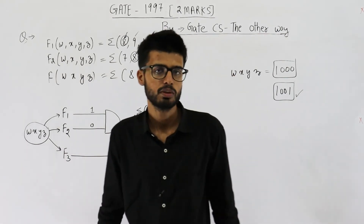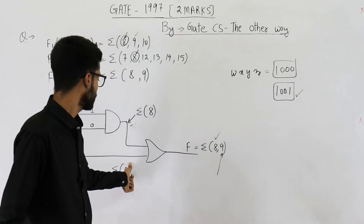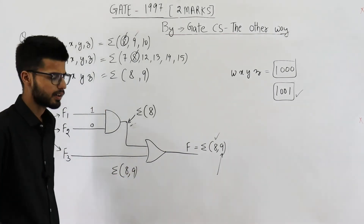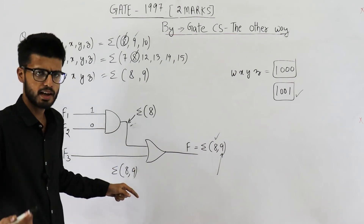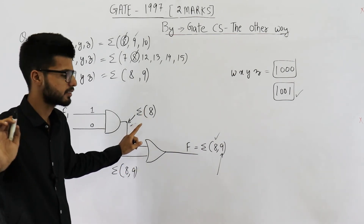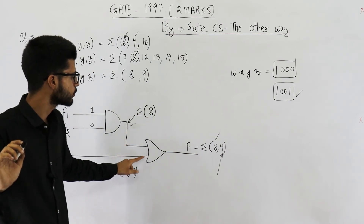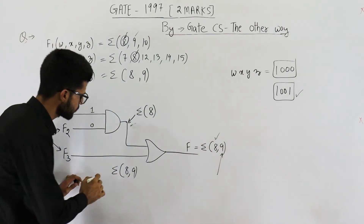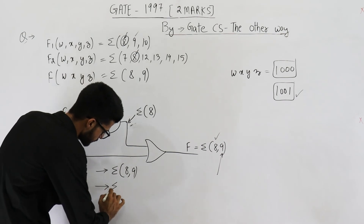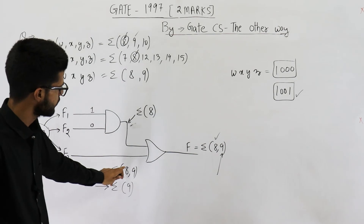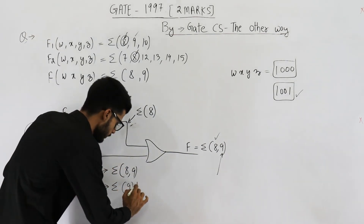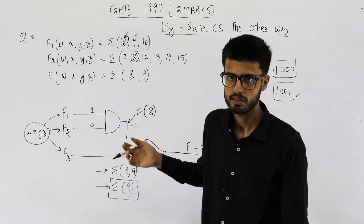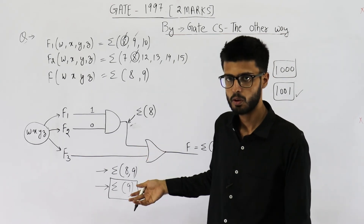So this is your answer. But one more thing to take care of: you can also write F3 = Σ(8, 9), because this is an OR gate. Even if both inputs to the OR gate are high on input 8, the output will still be high. So one possible answer is Σ(9) and another possible answer is Σ(8, 9). The first option is likely not present in the options, so Σ(9) will be your answer. But be careful — they can also give such questions in MSQ form, so multiple options might be correct.